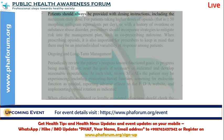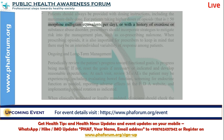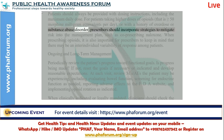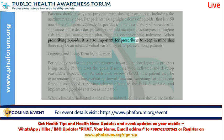Patients should always be provided with dosing instructions, including the maximum daily dose. For patients taking higher doses of opioids — greater than or equal to 50 morphine milligram equivalents per day — or with a history of overdose or substance abuse disorder, prescribers should incorporate strategies to mitigate risk into the management plan, such as co-prescribing naloxone. When prescribing opioids, it is also important to keep in mind that there may be inter-individual variability of response among patients.